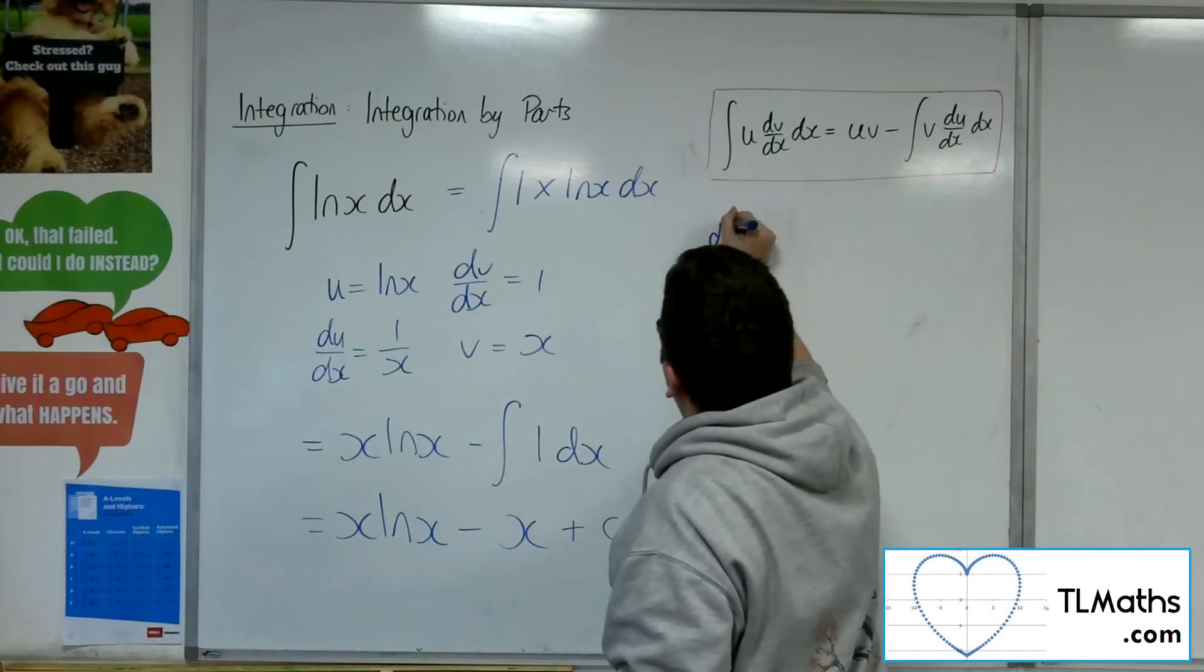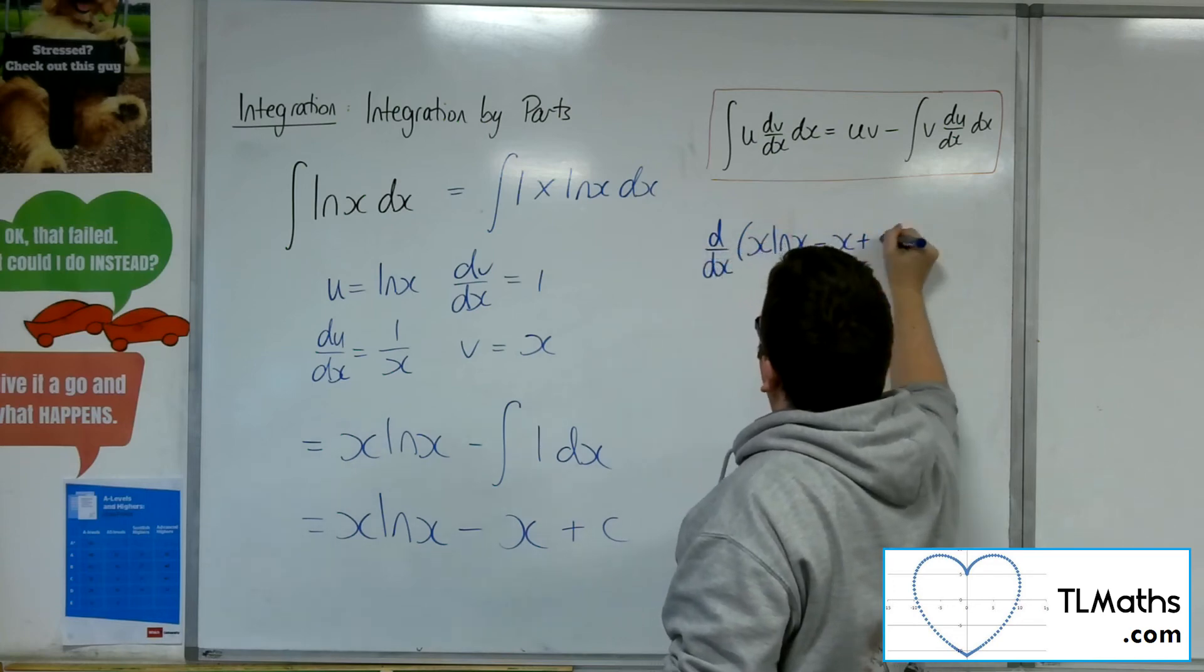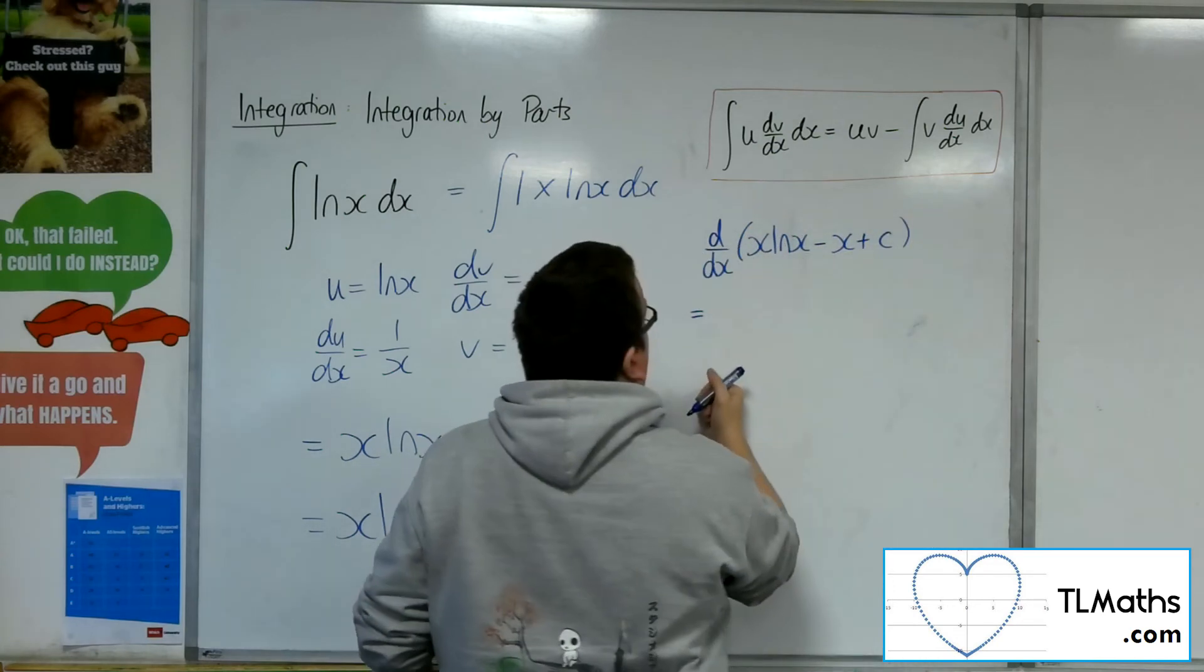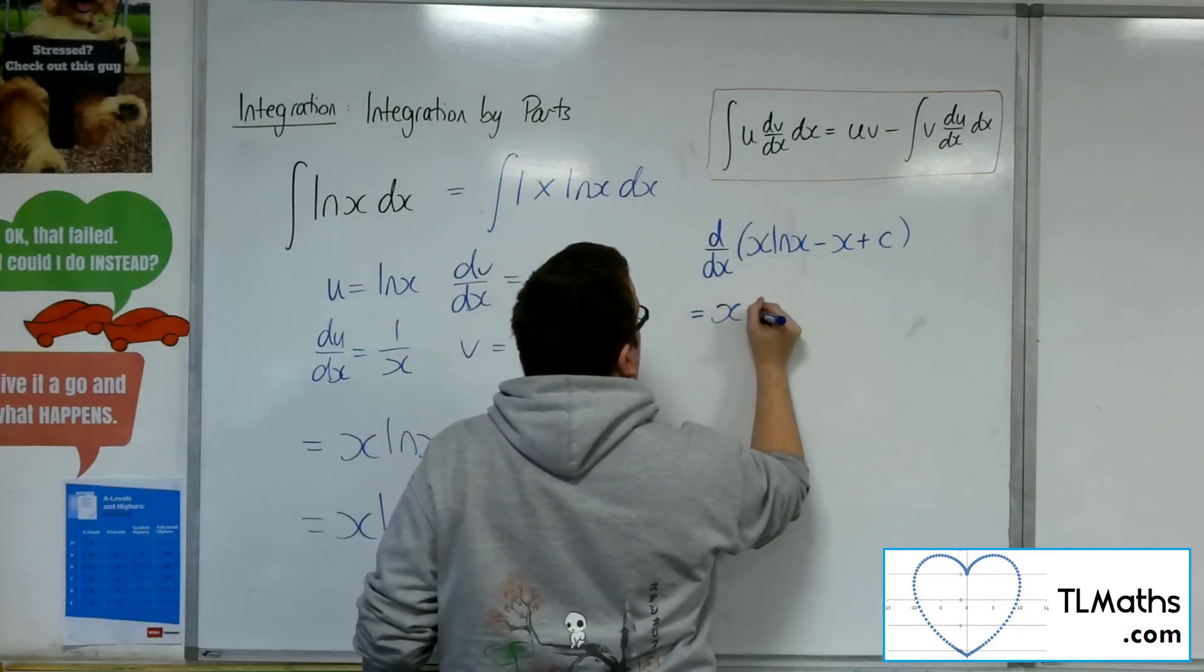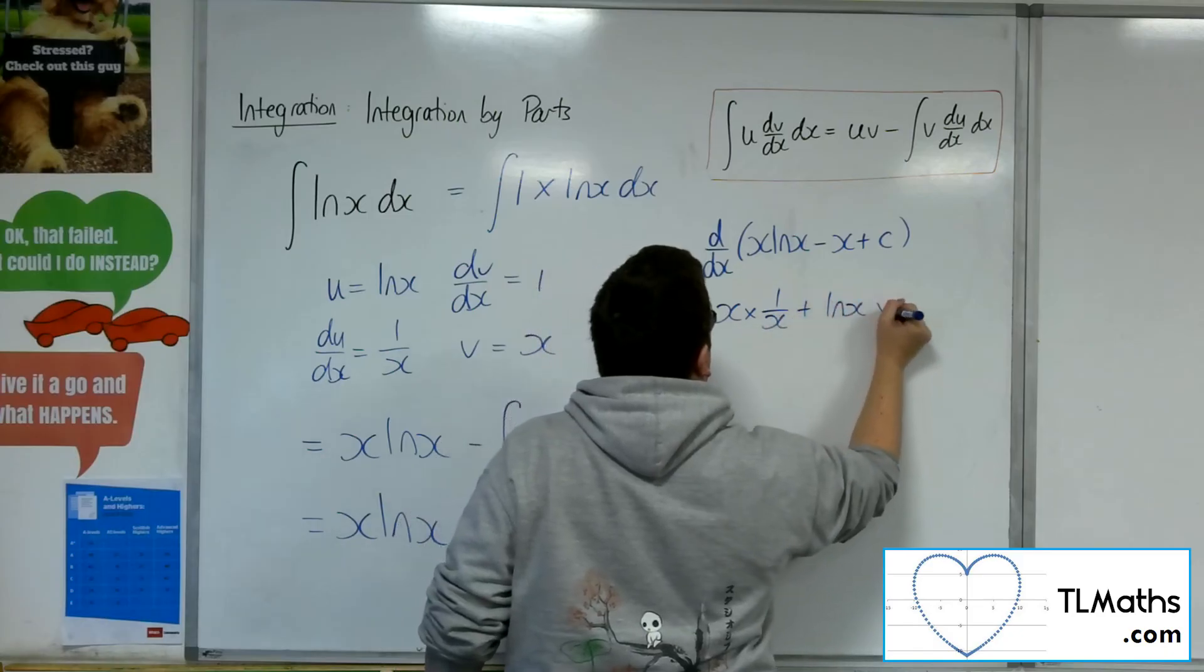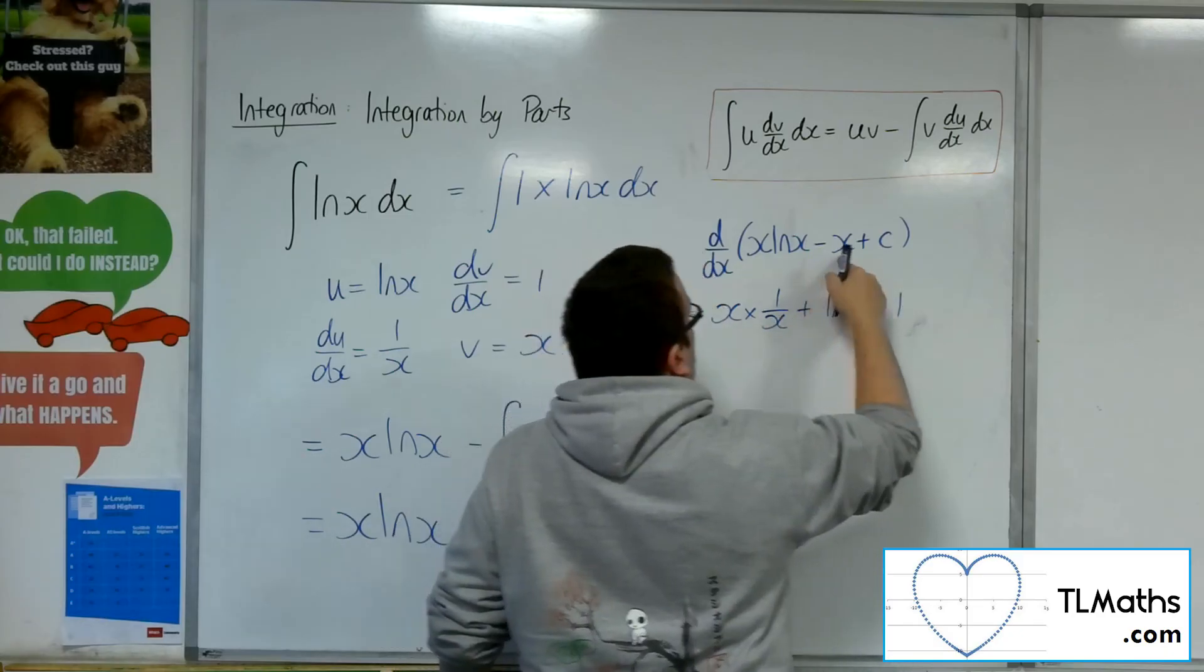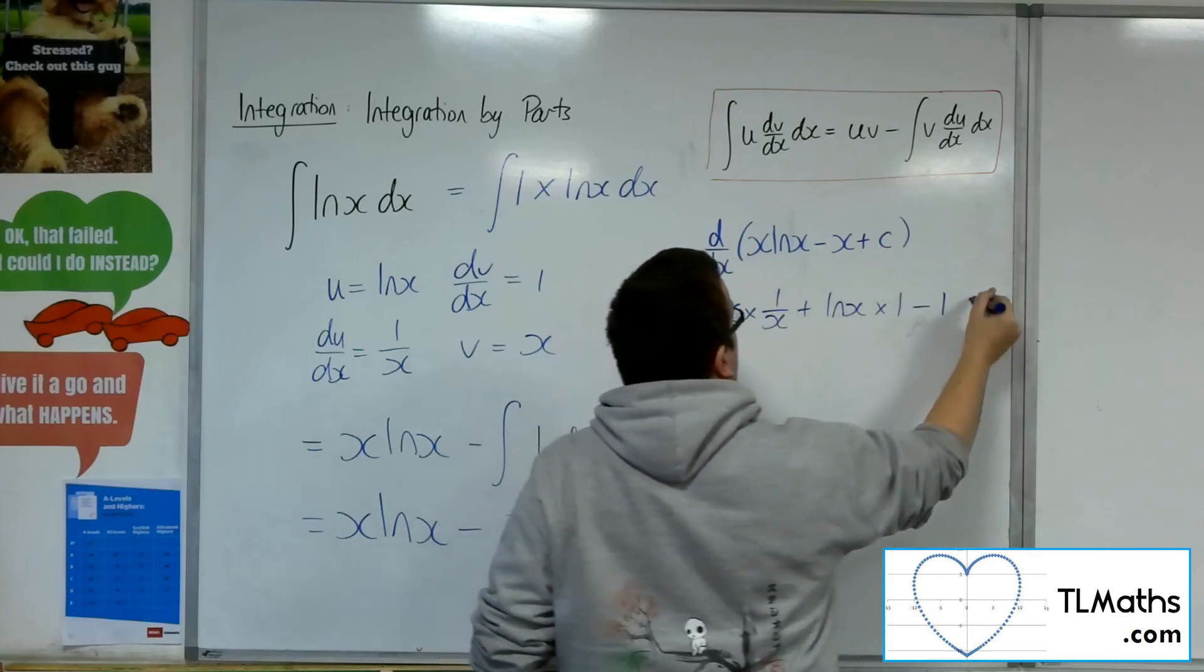So if we try it, just to kind of confirm. So I want to differentiate that. So I'm going to have to differentiate x log x using the product rule. So the first times the derivative of the second, plus the second times the derivative of the first. Take away x, so that differentiates to minus 1, plus c differentiates to 0, so that's gone.